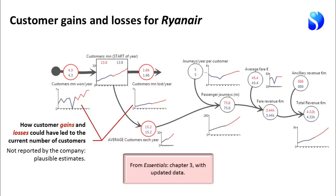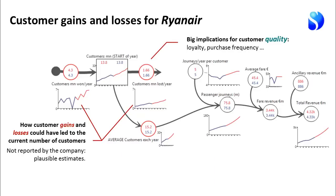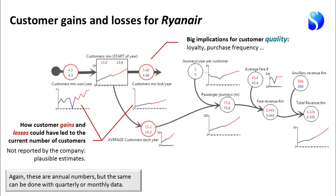There are big implications here for customer quality — how loyal are these customers, how frequently do they fly? These are annual numbers, but you could do the same analysis with quarterly or monthly data. Once again, this is not just a diagram but a working model. If you go to this URL, you can actually play with those flow rates of customers being won and lost.